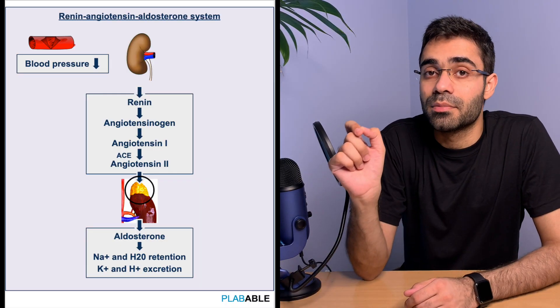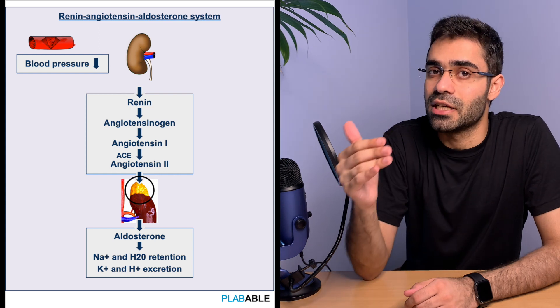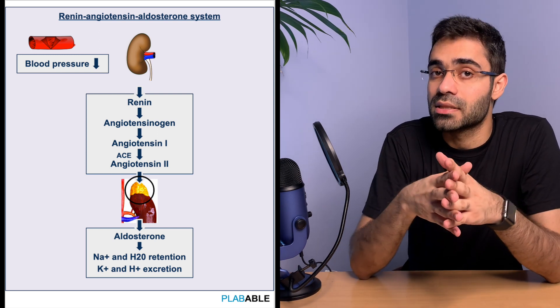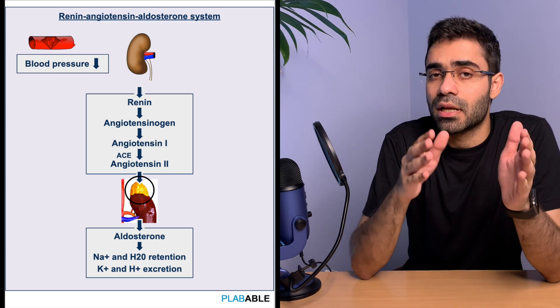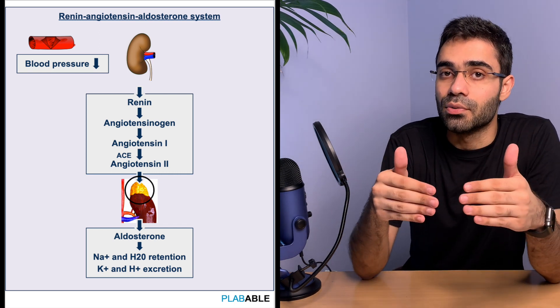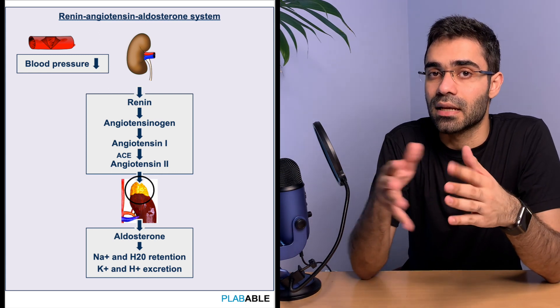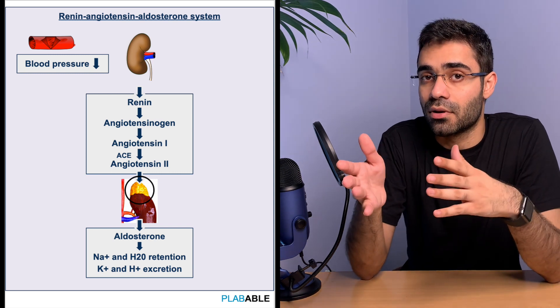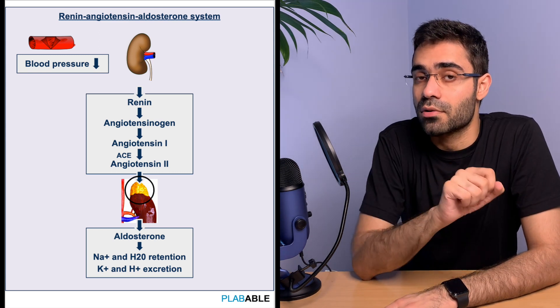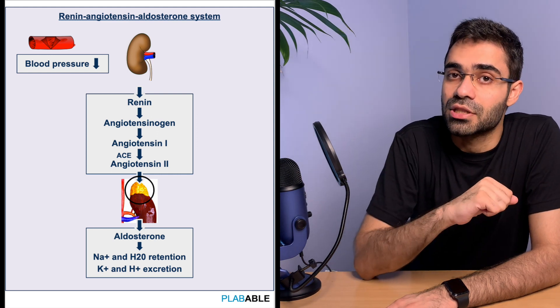Before we dive into the complexities of hyperaldosteronism, let's brush up on the physiology of the renin-angiotensin-aldosterone system. Whenever blood pressure decreases, renal perfusion decreases, GFR goes down, and this is sensed by the macula densa cells, which cause the release of renin from the juxtaglomerular cells. Renin converts angiotensinogen into angiotensin-1, which is then converted to angiotensin-2 by the ACE enzyme. Angiotensin-2 aids in the release of aldosterone and causes vasoconstriction. Aldosterone helps in the retention of sodium and water in the kidneys and aids in the excretion of potassium and hydrogen ions.